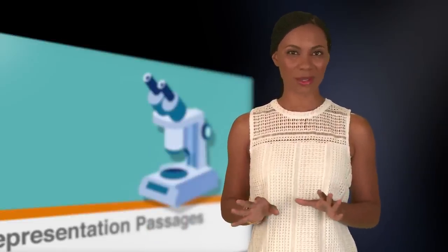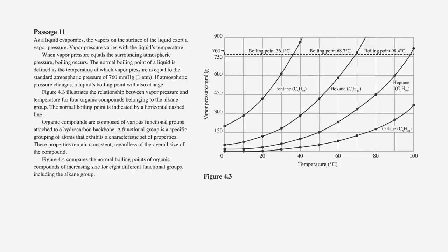Let's try another question using a graph. In this example, it might seem like we're jumping around a lot, but you'll see the advantage of skimming, going to the question, and then referring back to the passage when you need more information. After you skim the passage, go straight to the questions. Our first question will ask for Figure 4.3, which we show here, so we'll focus on that in the passage.